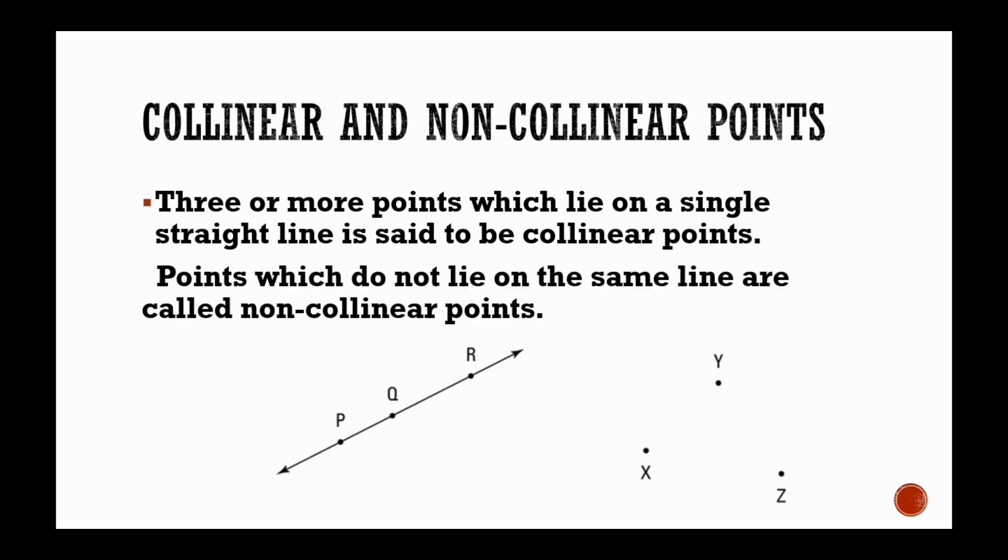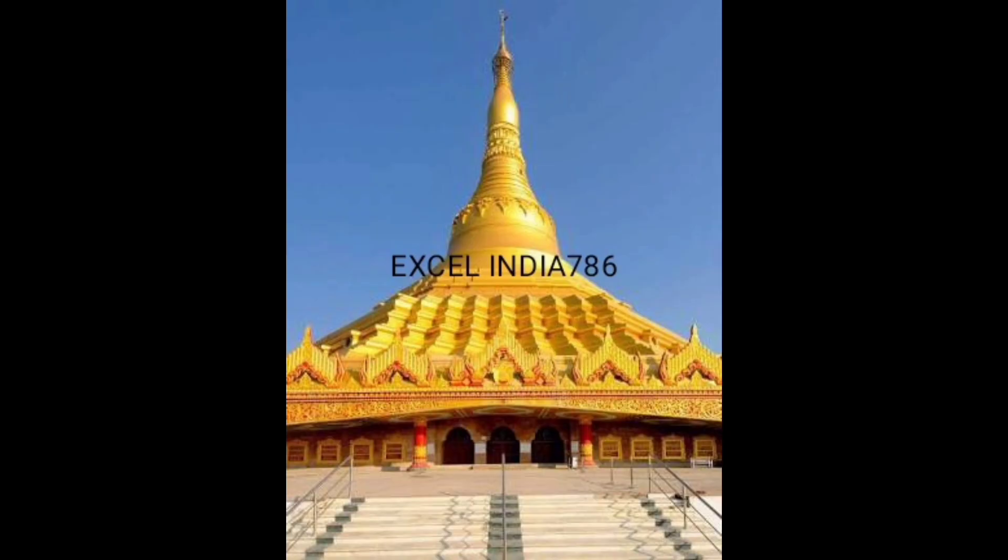Points which do not lie on the same line are called non-collinear points. In the following figure, point X, point Y and point Z are non-collinear points.